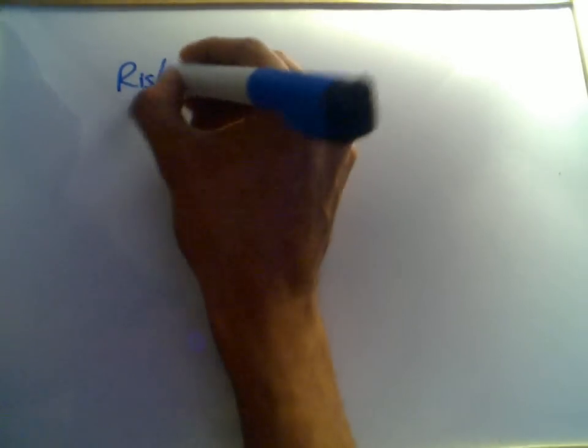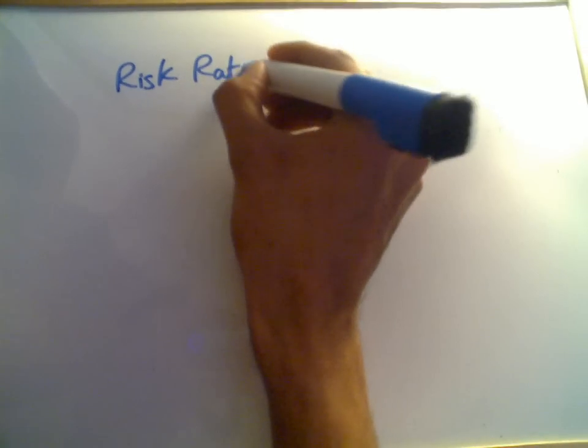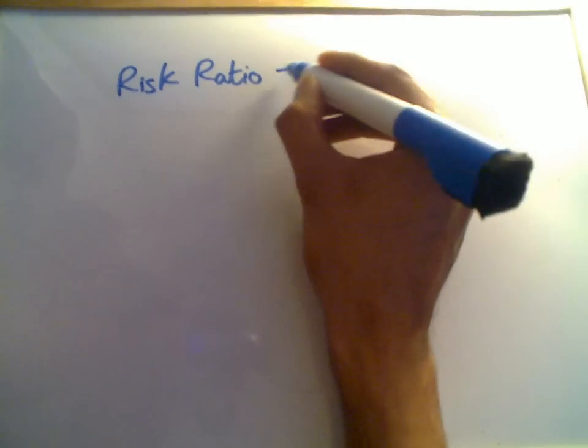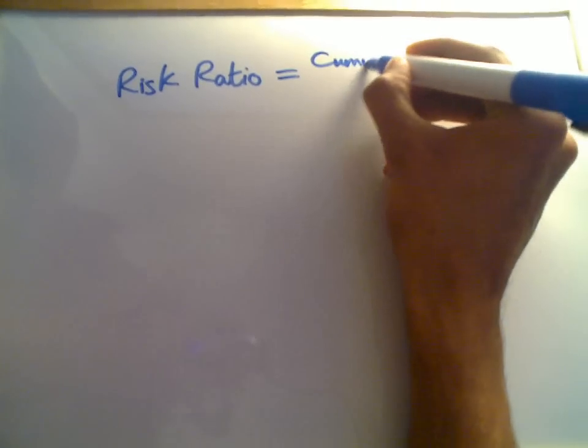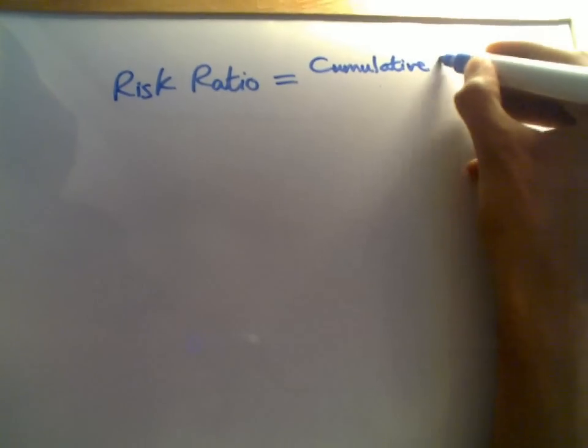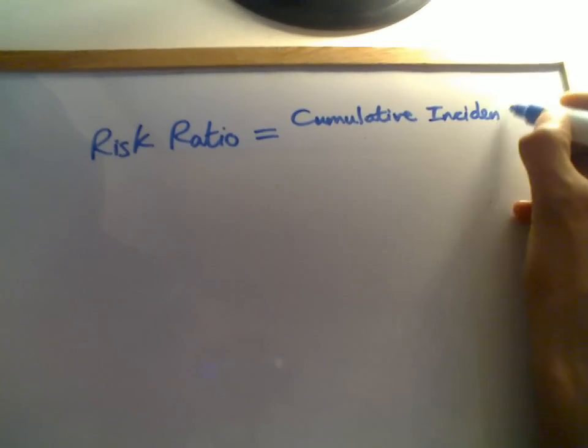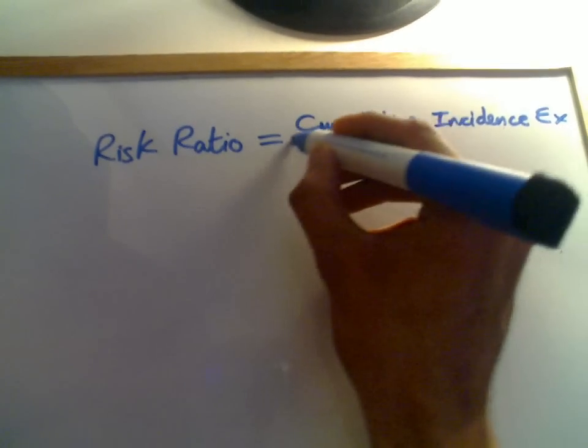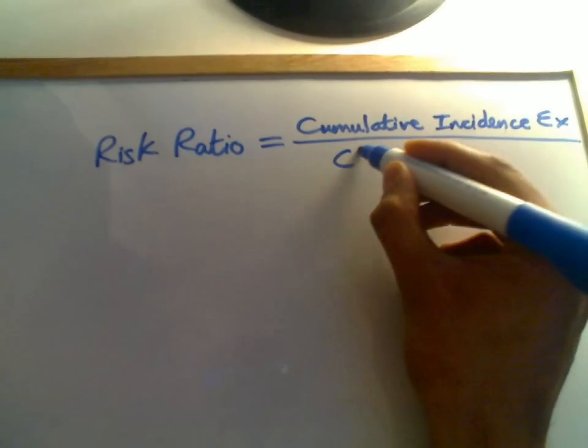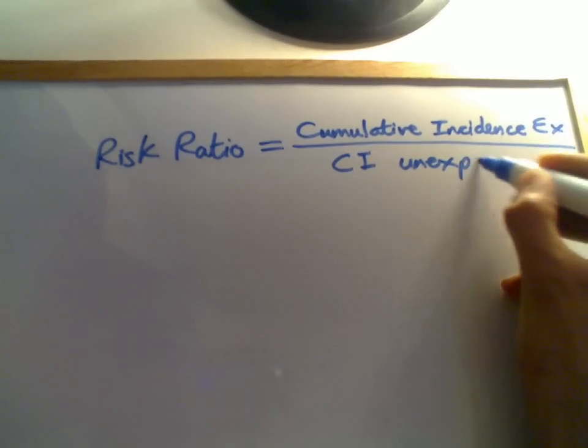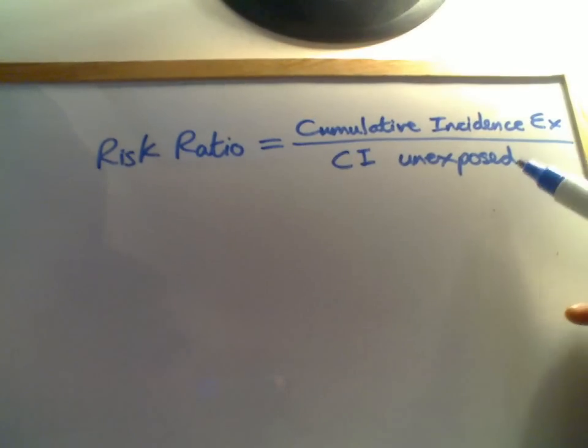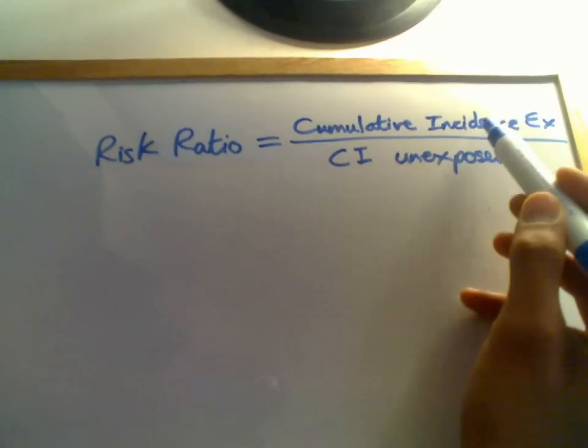If you keep in mind that it's a ratio, then you can figure out anything basically. So if you ever hear the term risk ratio, you'll know straight away what that means. Risk is commonly used interchangeably with cumulative incidence. So you'd know that was cumulative incidence in the exposed group over cumulative incidence in the unexposed. You'd know that because it's a ratio, it's exposed over unexposed. Because it's risk, risk is used interchangeably with cumulative incidence.